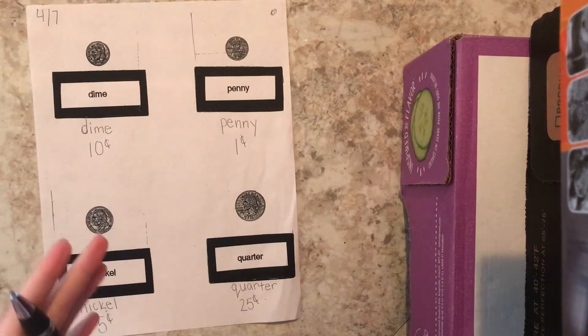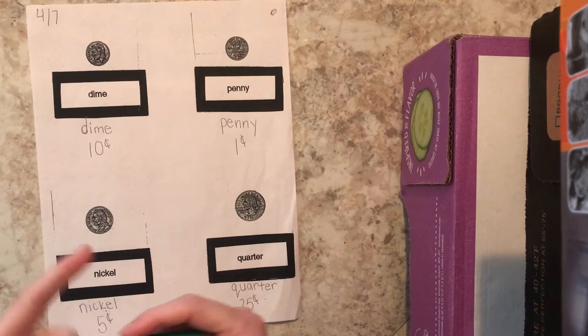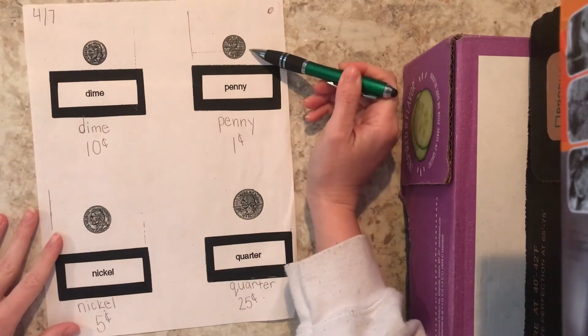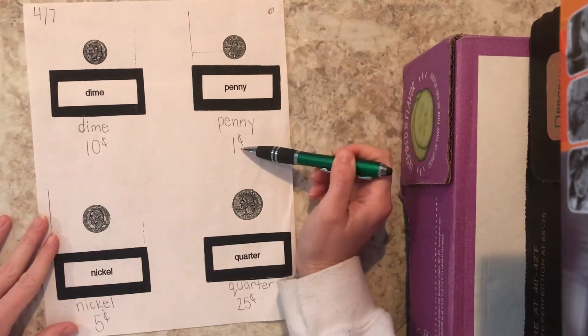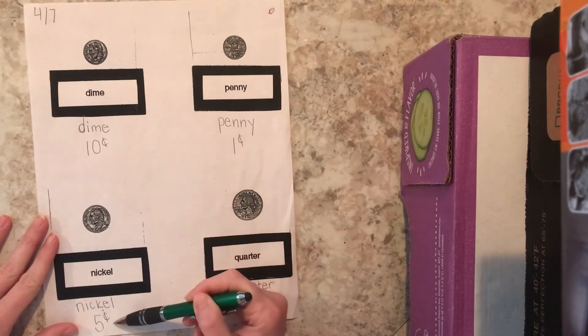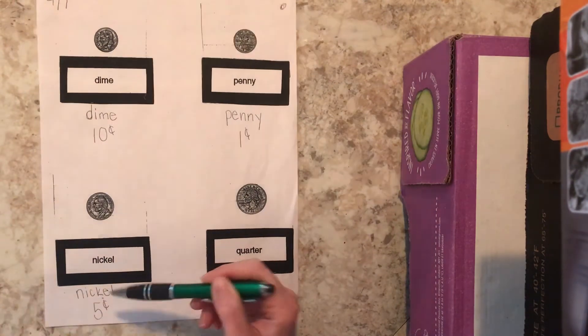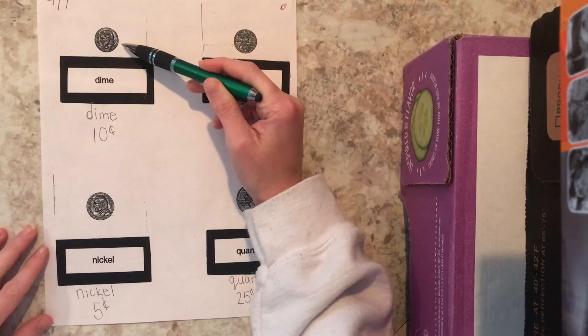We're gonna do that by going over our money song. So remember it goes penny penny easily spent copper brown and worth one cent, nickel nickel thick and fat you're worth five cents I know that, dime dime little and thin I remember you're worth ten.